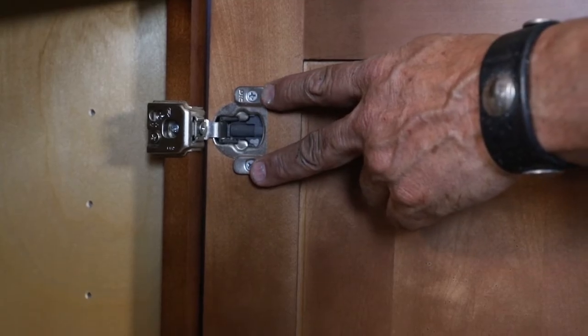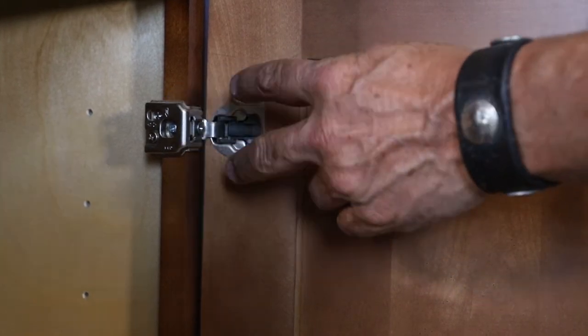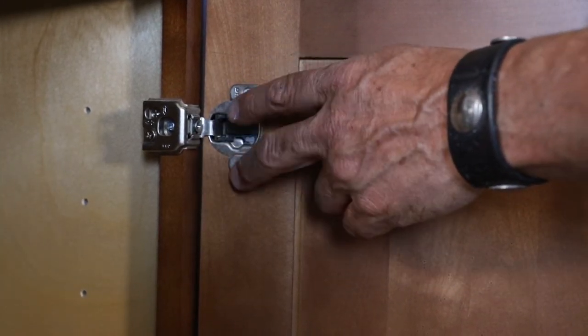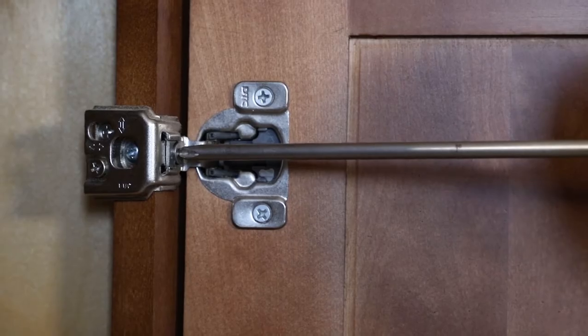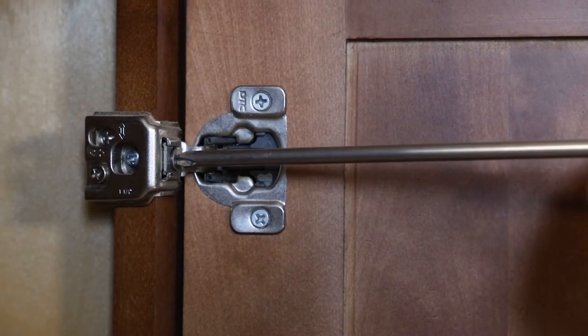The screws right here, you're going to leave alone unless you're trying to remove the door off the cabinet. That is a cam style screw. So if I move this screw and I drive that forward, I know the top edge is coming down.